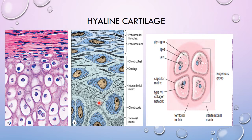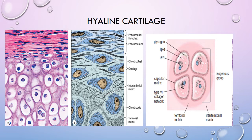There are two types of matrix. The matrix close to the chondrocytes is called the territorial matrix, which is rich in glycosaminoglycans and stains differently from the surrounding area. The matrix between chondrocytes is called the inter-territorial matrix. A characteristic feature of hyaline cartilage is that the mature chondrocytes do not lie singly but are aggregated in groups of two, four, or eight — these groups are called isogenous groups, which distinguishes hyaline cartilage from elastic cartilage and fibrocartilage.